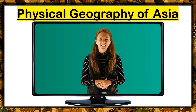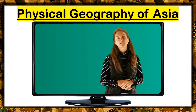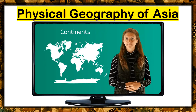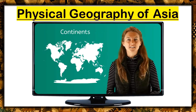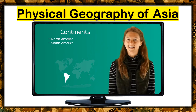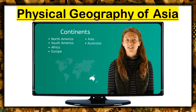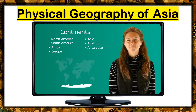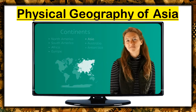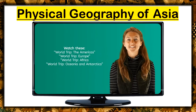In order to make it easier to talk about the countries of the world, it had to be divided into seven geographic regions called continents. The seven continents of the world are North America, South America, Africa, Europe, Asia, Australia, and Antarctica. In this video, we'll focus on Asia. Be sure to watch our other videos to learn about the other six continents.